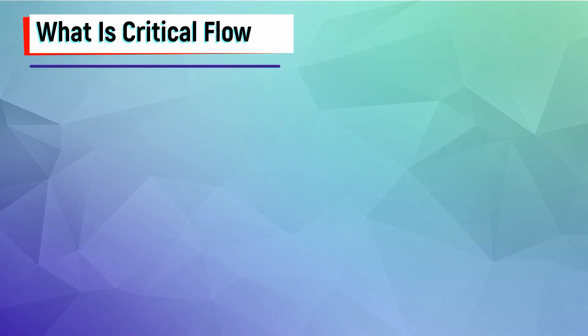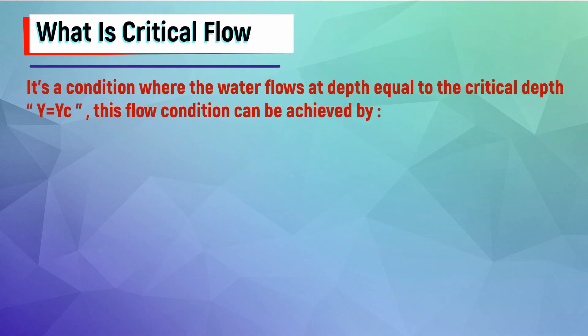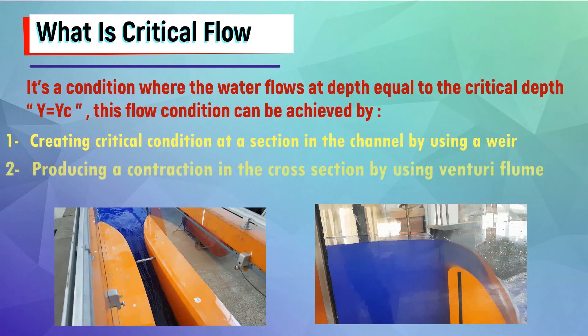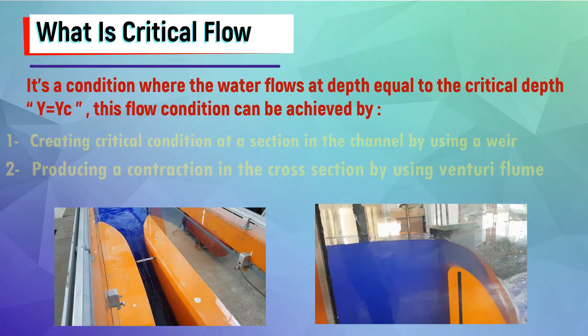What is critical flow? It's a condition where the water flows at a depth equal to critical depth, y equals yc. This flow condition can be achieved by first creating a critical condition at a section in the channel by using a weir or by producing a contraction in the cross section by using a venturi flume.